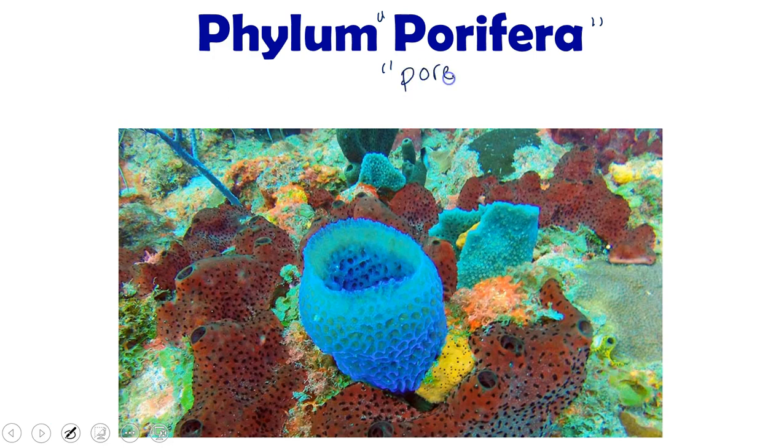Remember that a pore is a hole. So these guys were named for the fact that they have holes all over their bodies. We typically know our perifera as sponges. By this we mean sea sponges, not our kitchen sponges. And there are about 5,000 species of perifera. Mostly in the ocean, but there are some freshwater species.